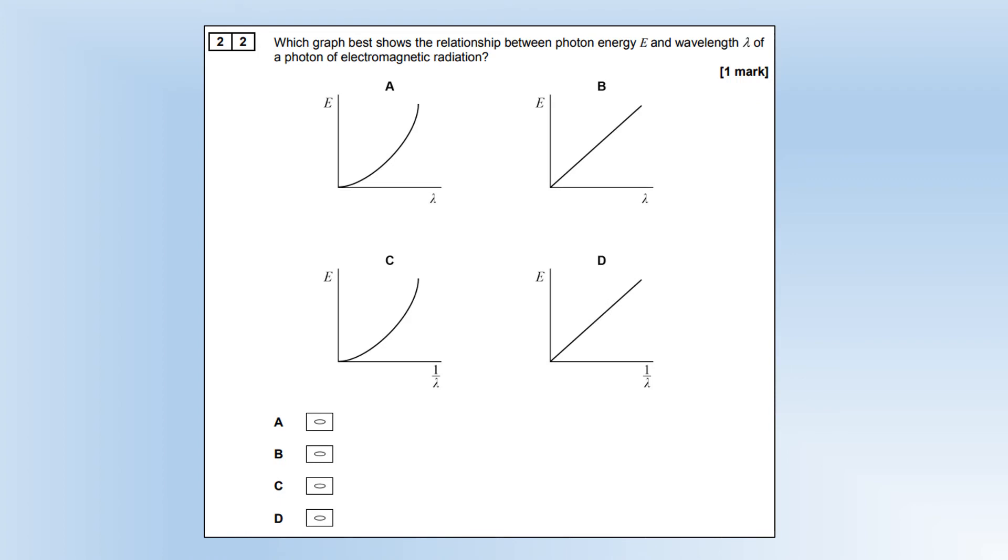Which graph best shows the relationship between photon energy and wavelength? E is equal to Hc over lambda. So we want E is directly proportional to 1 over lambda. And the gradient there would be Planck's constant times by the speed of light.